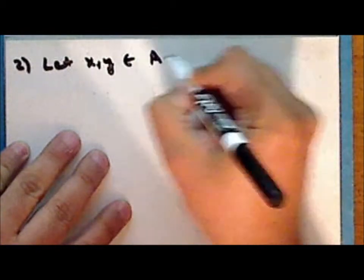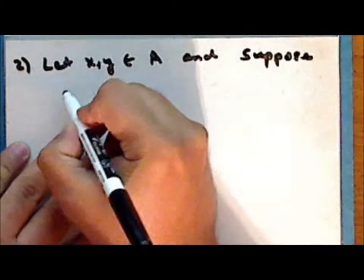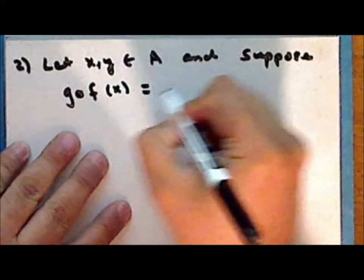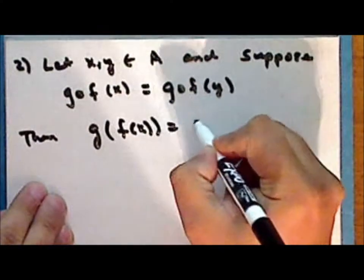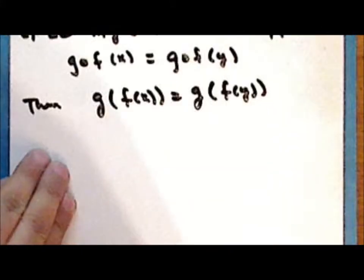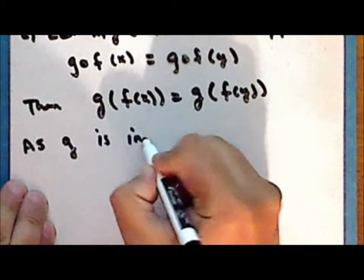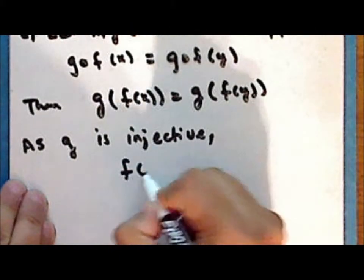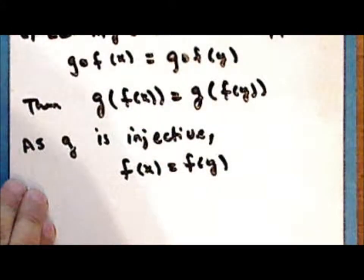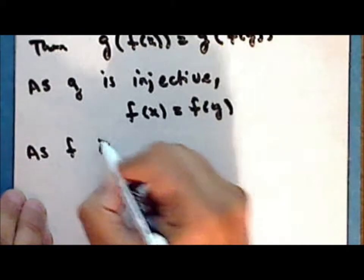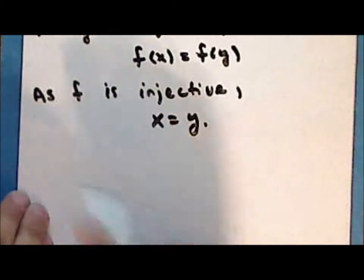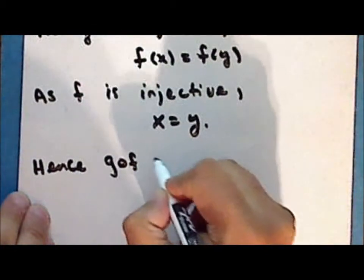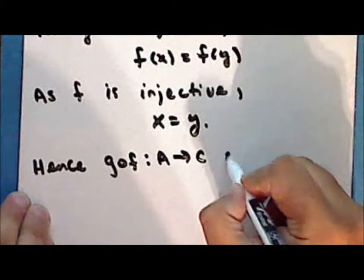Second statement: let X and Y be elements in the set A, and suppose that G of F of X equals G of F of Y. Then G of F(X) equals G of F(Y). As the function G is injective, F of X equals F of Y. And as the function F is injective, X equals Y, and hence the composition G of F, a function from A into C, is an injection.